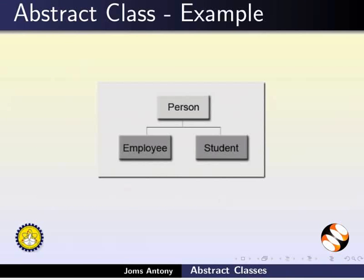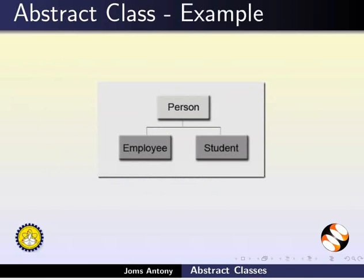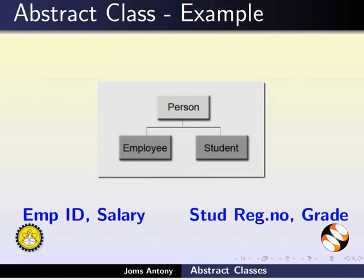The figure here represents an Inheritance relation. The Person class is an Abstract Class. The Employee Class and the Student Class are subclasses of the Person class. These subclasses can provide their own different implementations via the showDetails method. For example, showDetails in the Employee Class prints the Employee ID and salary, whereas showDetails in the Student Class prints the student register number and grade.